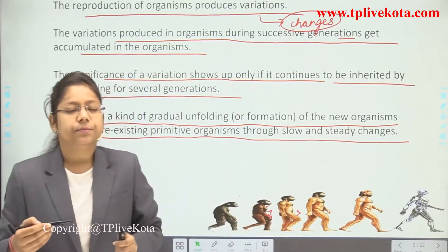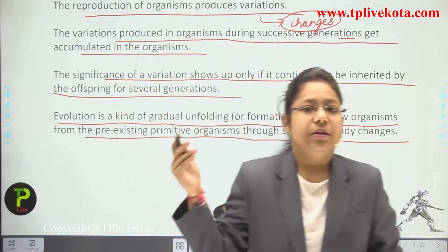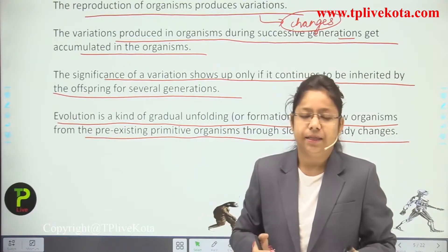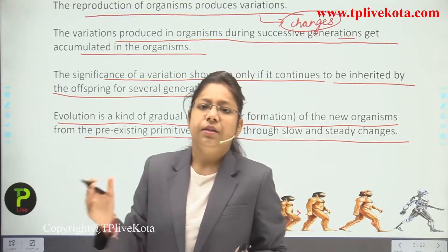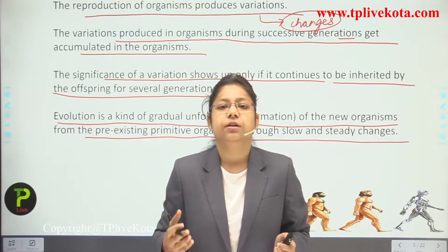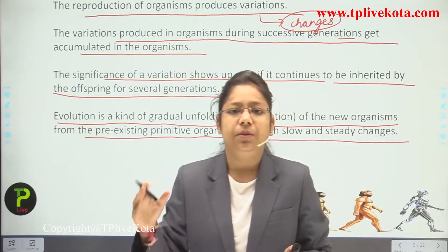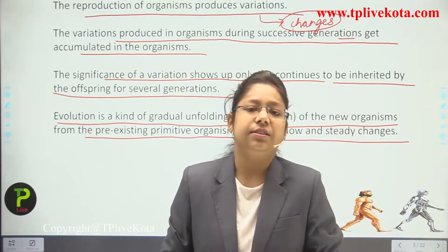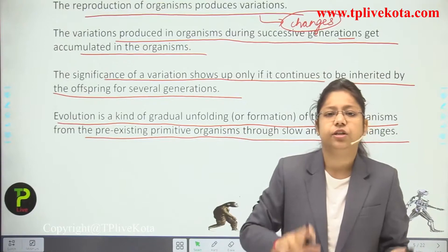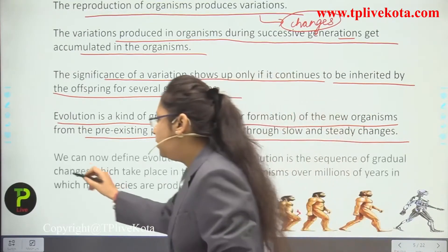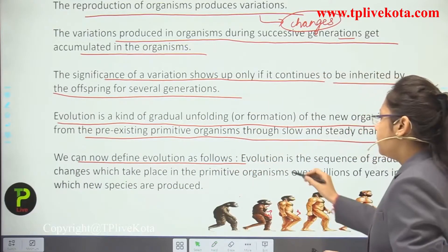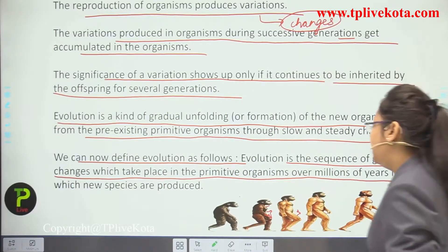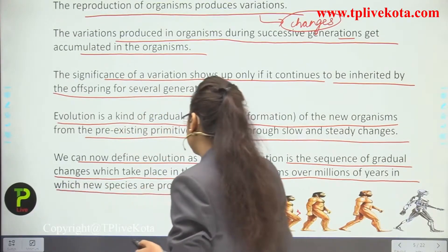Early men did not have fully developed brains and used whatever was nearby them. But now the human brain has developed and people are running through technologies — because the brain has evolved. This is because many variations are occurring inside the gene of a person, and because of variation, evolution takes place. Evolution can be defined as the sequence of gradual changes which take place in primitive organisms over millions of years in which new species are produced.